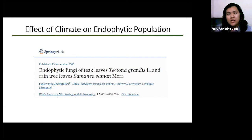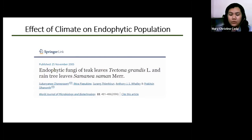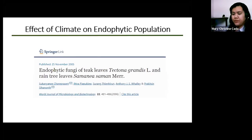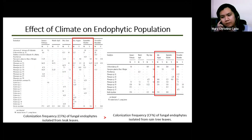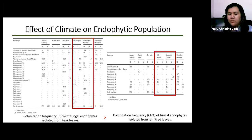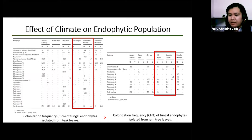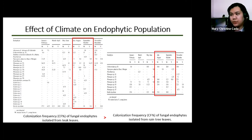These studies indicate that endophytes isolated can vary from plant to plant and from species to species, and also from one region to another. The population of endophytes can be greatly affected by climatic conditions as well as the location where the plant host grows. A study by Chareprasert et al. in 2005 examined temporal changes in relative frequency of endophyte fungi from two plant species — teak (Tectona grandis) and rain tree — finding that mature leaves had greater colonization frequency, and occurrence increased during the rainy season.